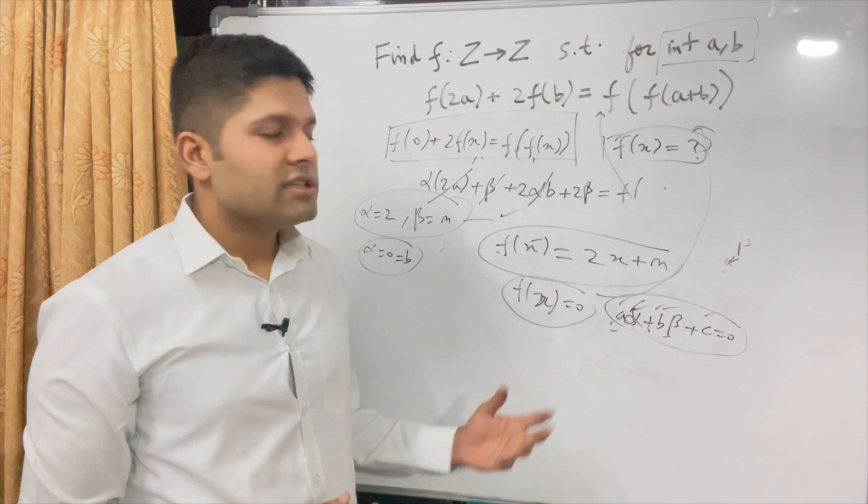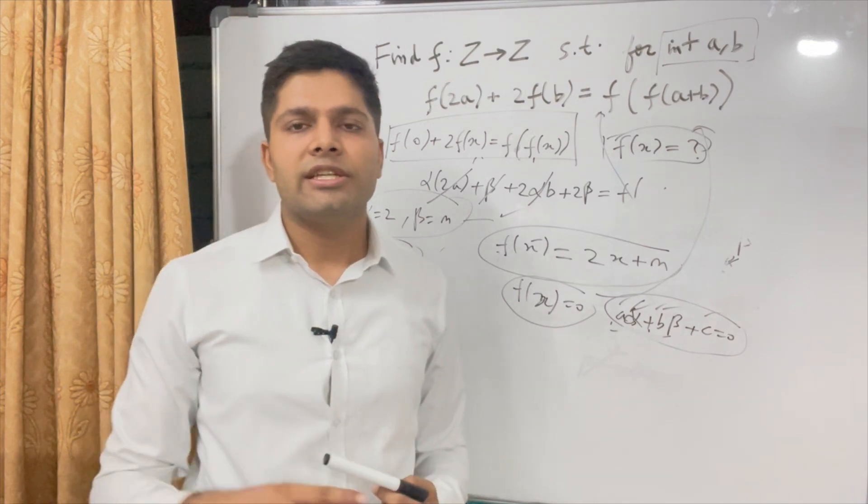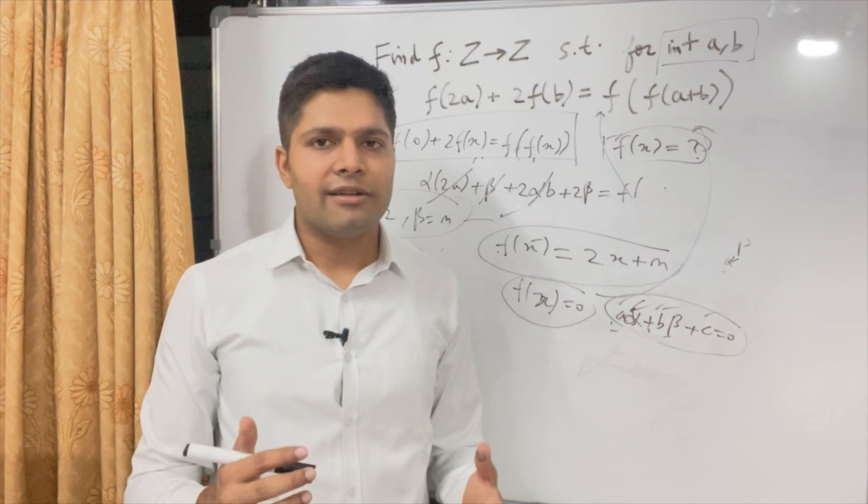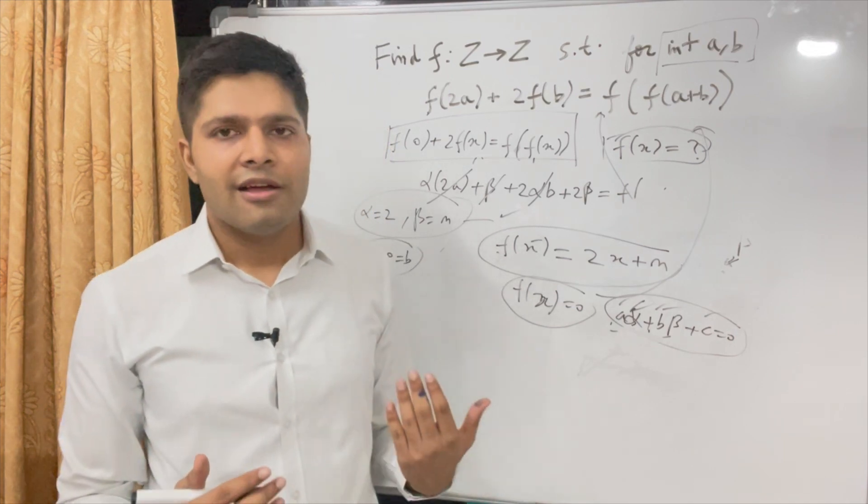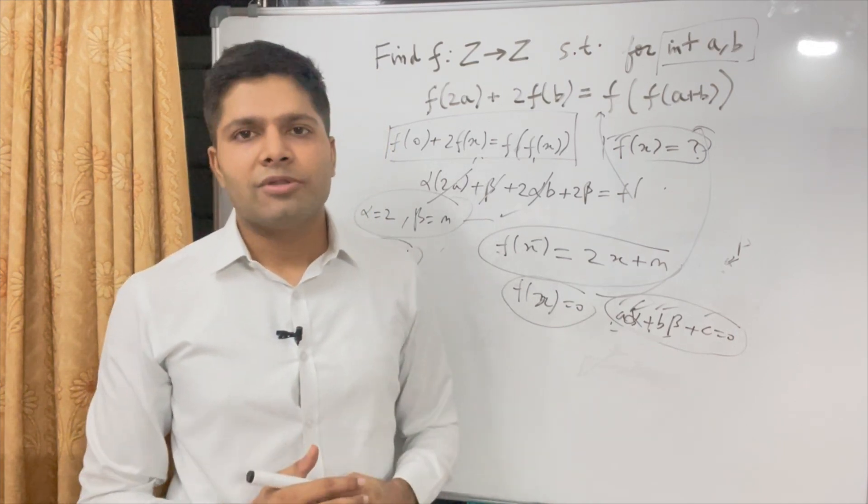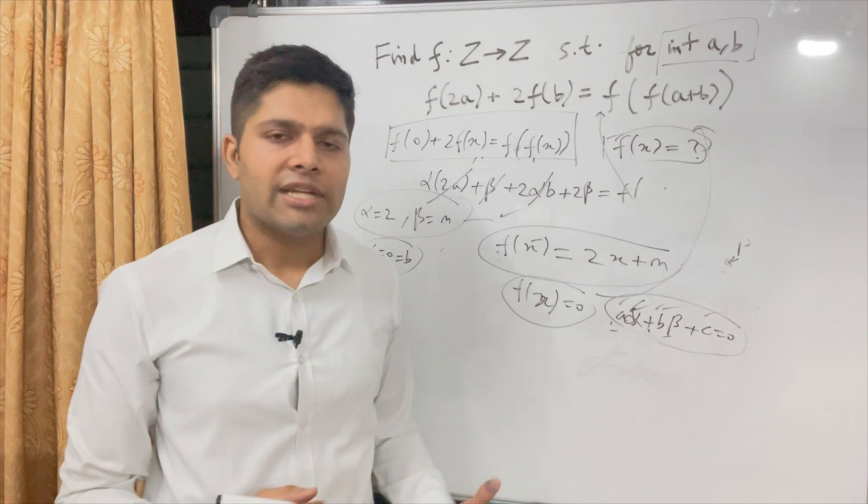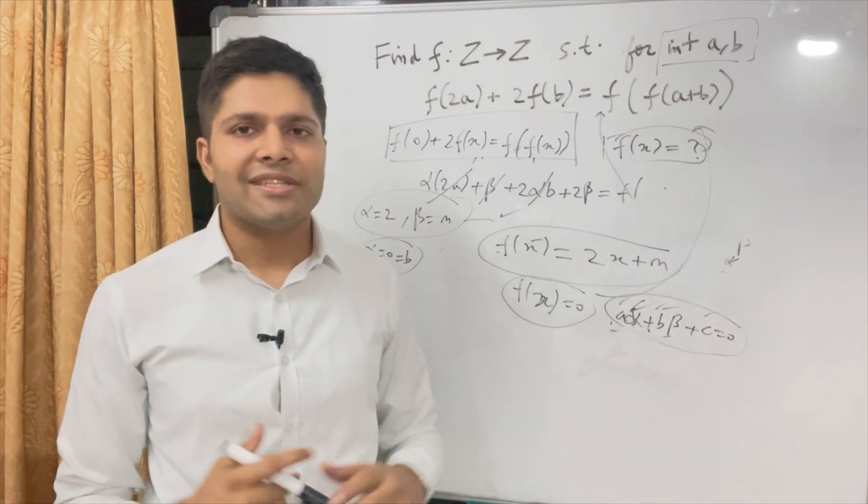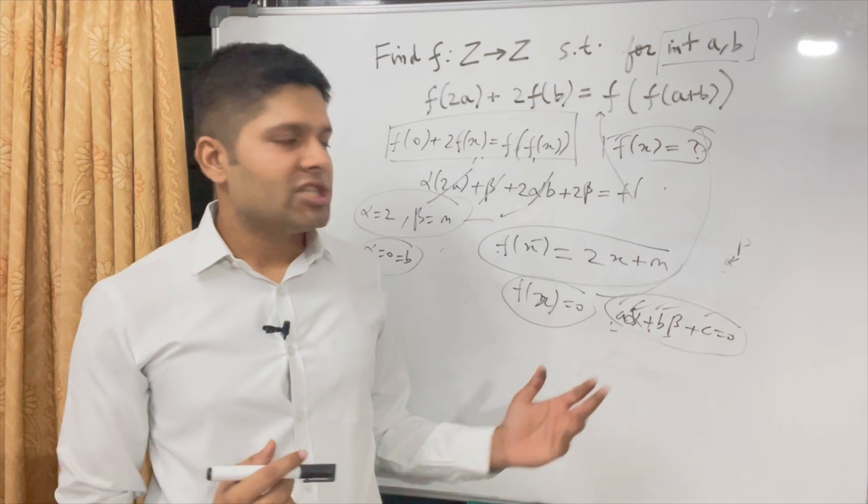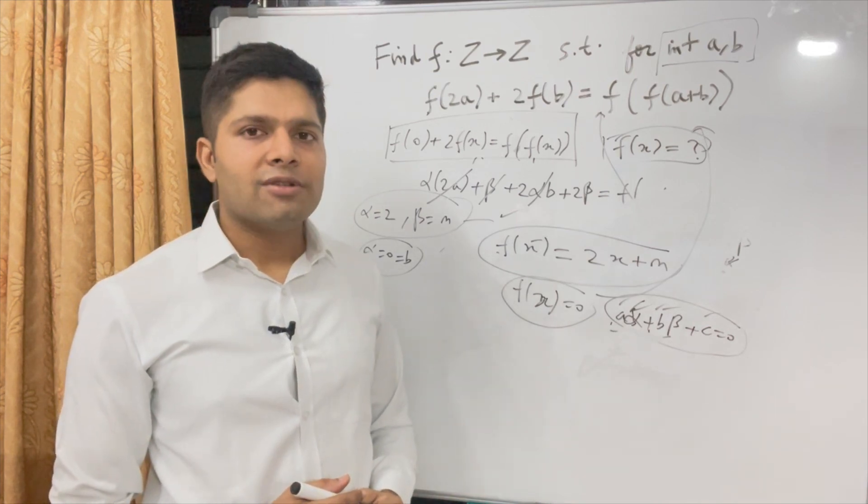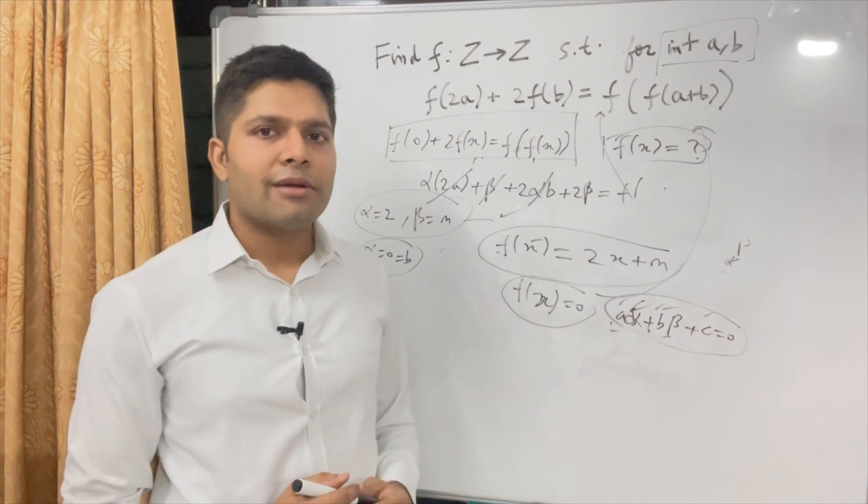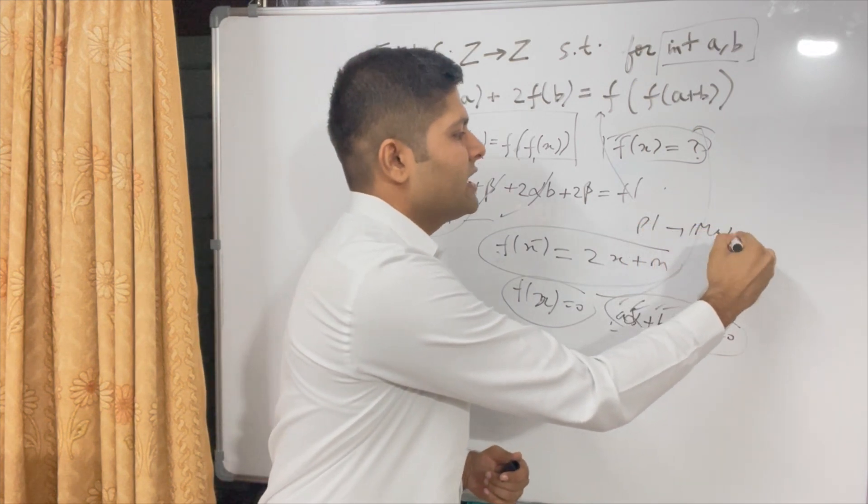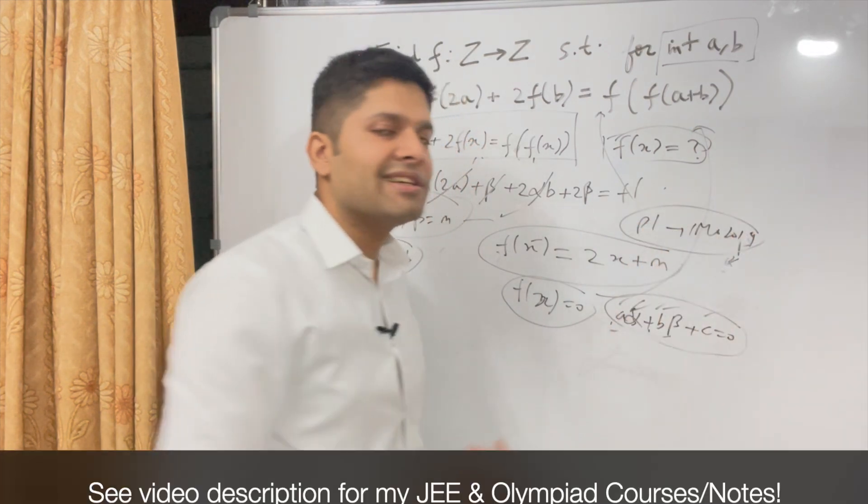So if you like this question, you can subscribe to the channel. And I also teach JEE and Olympiad math. So if you're interested in learning JEE physics, chemistry, maths from me, then you can check the link in description. I also have a mathematical Olympiad course that is also linked in description. I have free JEE notes. I have a lot of things going on in the description. You can check them out. And that is the question. It was a doable question. And it was probably one of the easiest questions in that paper. This was problem number one in IMO 2019. So first problem is usually the easiest one.